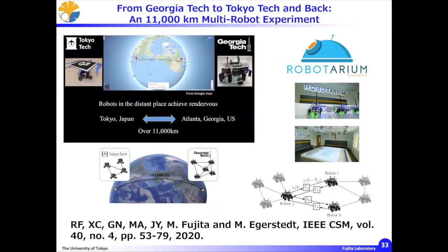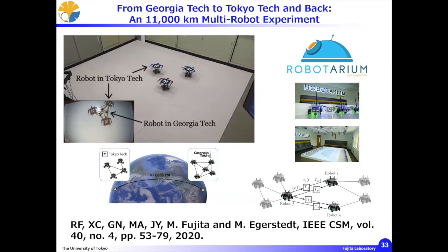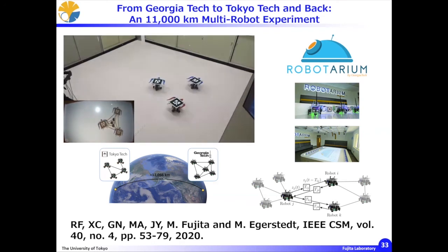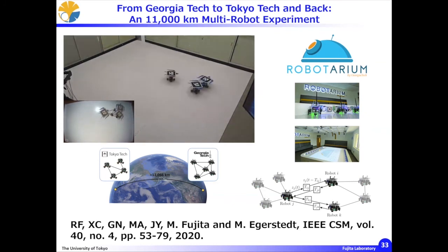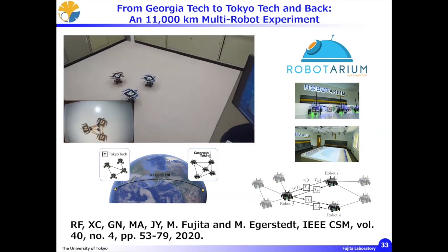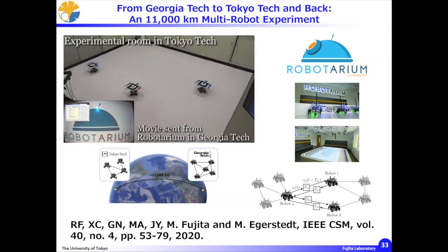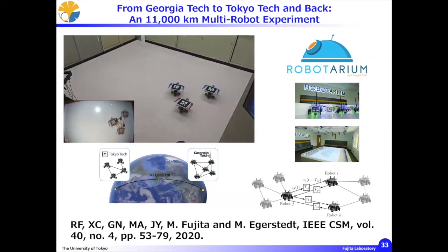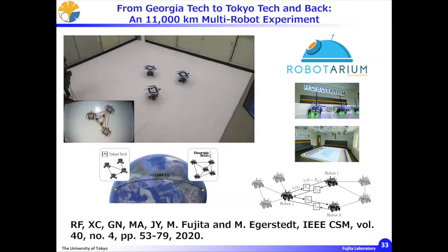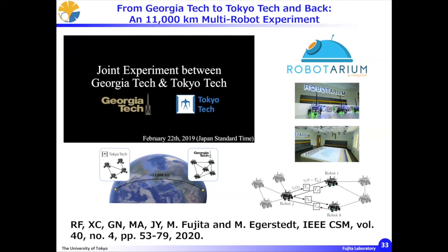In a recent issue of the IEEE Control Systems Magazine, our group in Tokyo and the Georgia Tech group in Atlanta jointly conducted a multi-robot experiment. We achieved successful coordination of robot teams over long distances — from Georgia Tech to Tokyo Tech and back — an 11,000-kilometer multi-robot experiment. Since both multi-robot systems were operated based on passivity-based control, they are robust and strong against time delay caused by the Internet. For details, please refer to our paper in the IEEE Control Systems Magazine.